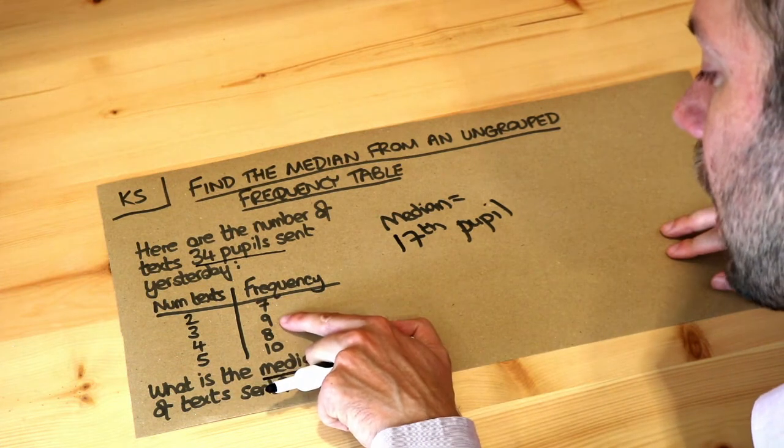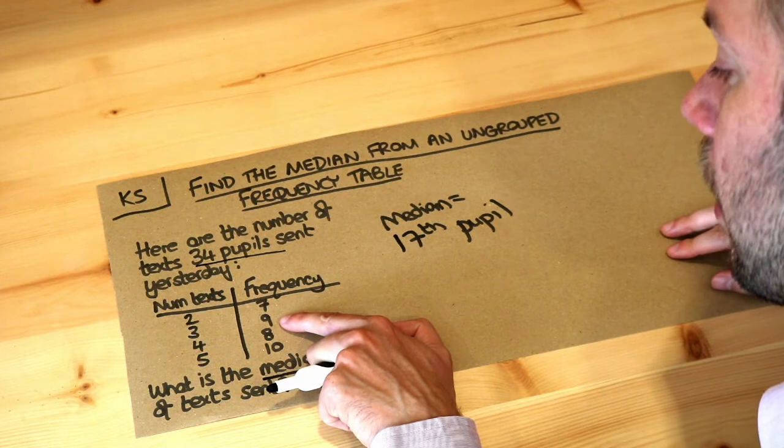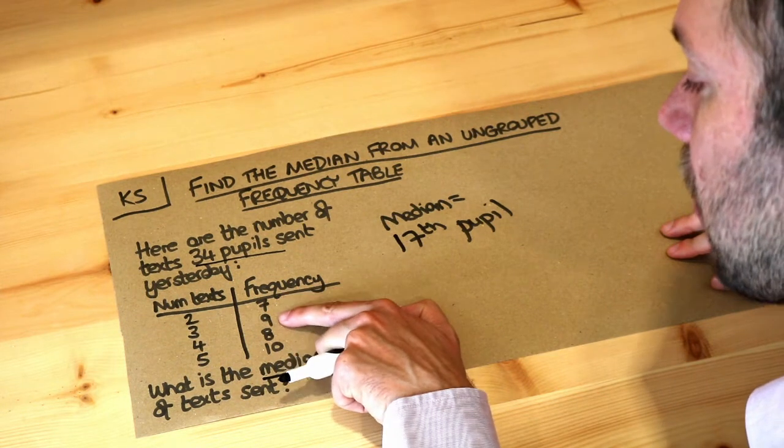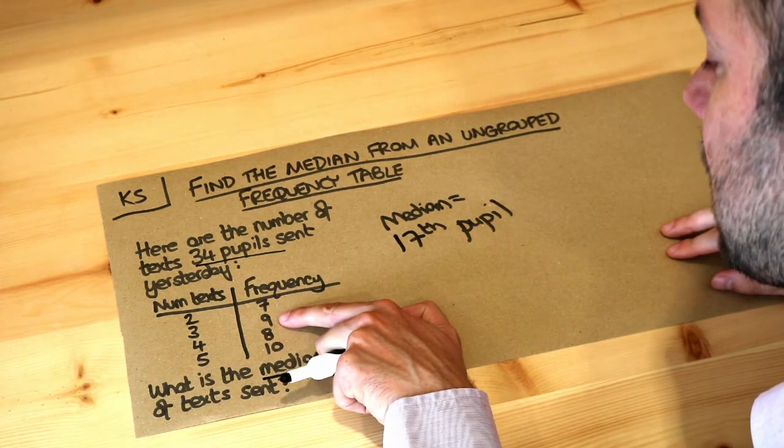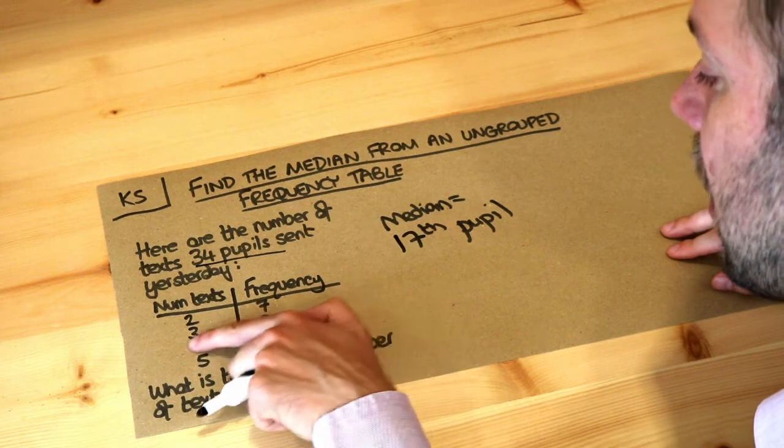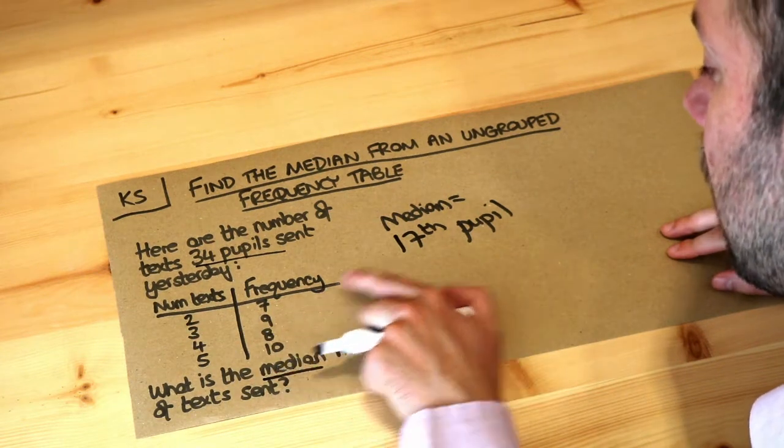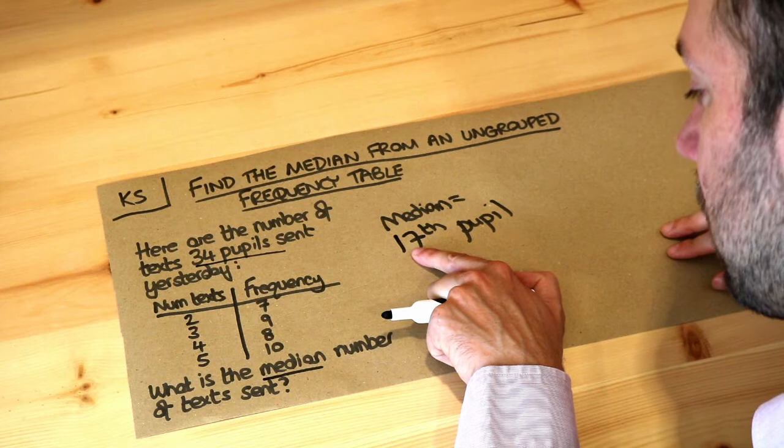But do they occur within the next nine peoples? Well, if you've got seven peoples here and nine peoples here, that's 16 peoples in total have sent up to three texts. But we want the 17th people, which is after that.